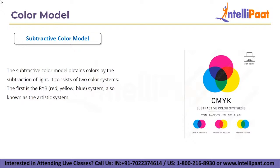RYB is often used in art education, especially in painting, and was the basis for modern scientific color theory, which determined that cyan, magenta, and yellow are the most effective set of three colors to combine — forming the CMY color model. CMY is mostly used in printing. When photomechanical printing included black ink as a key component, the system was named CMYK: cyan, magenta, yellow, and black.